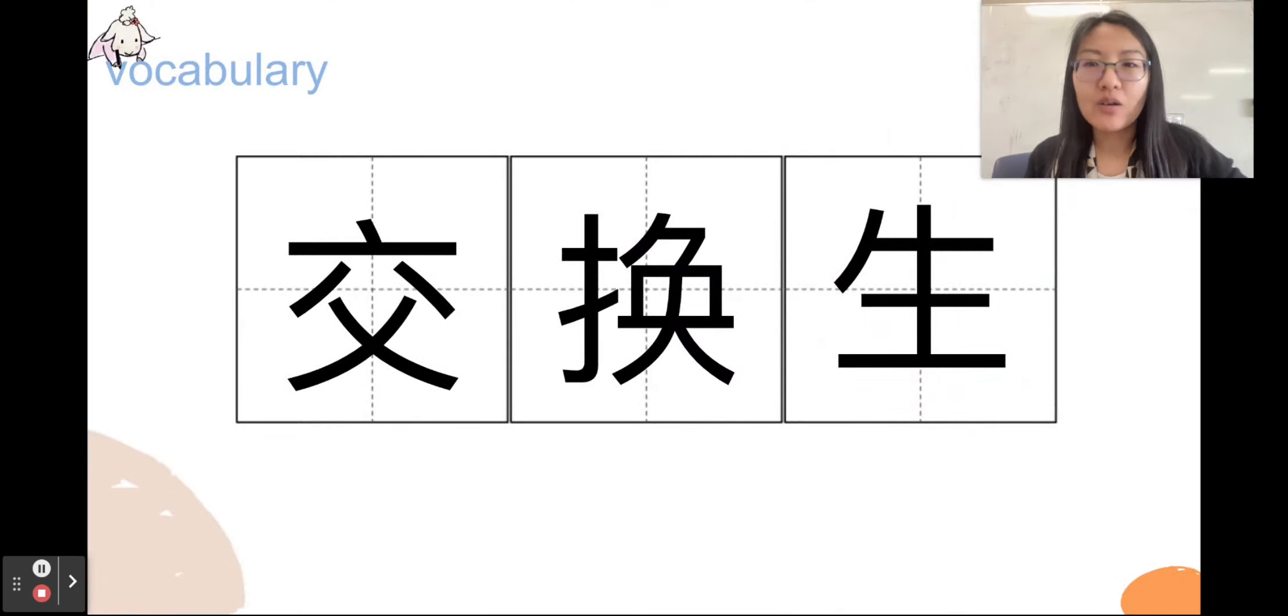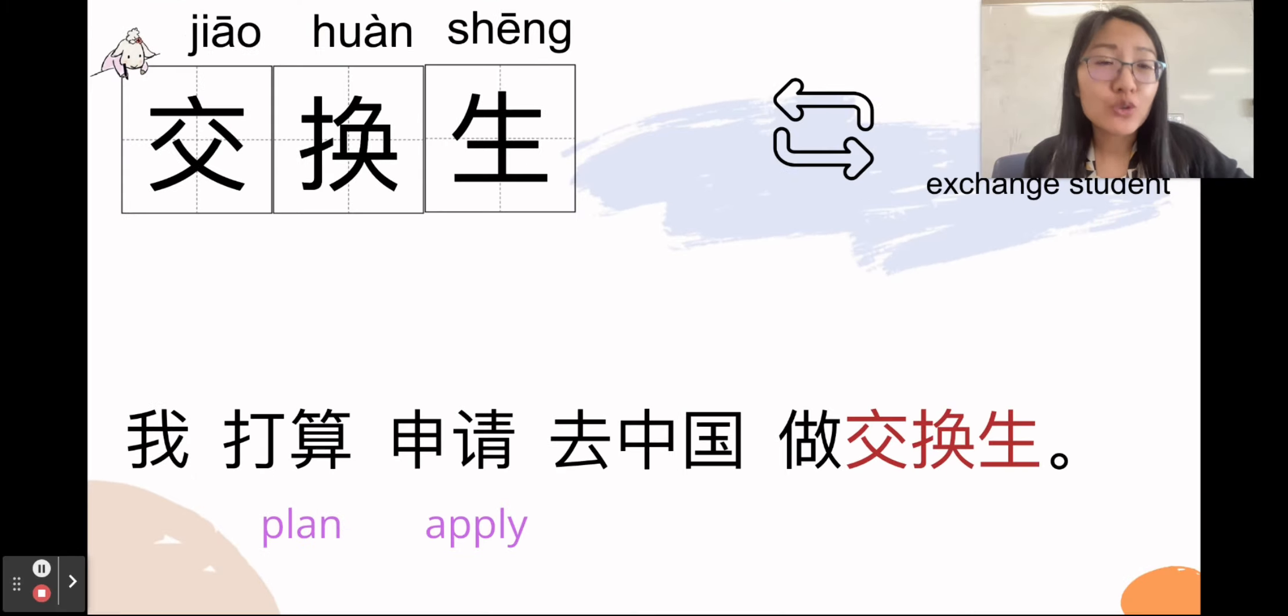So let's learn some vocabulary right now. 交换生, 交换生. So if you think 学生, that's very very close. So you can actually, if you really don't know this two word, just say 学生, right. A 学生 from America, 从美国来的学生. 所以交换生, exchange student, 交换, 交换. So, 我打算申请去中国做交换生, all the key words from AP test.